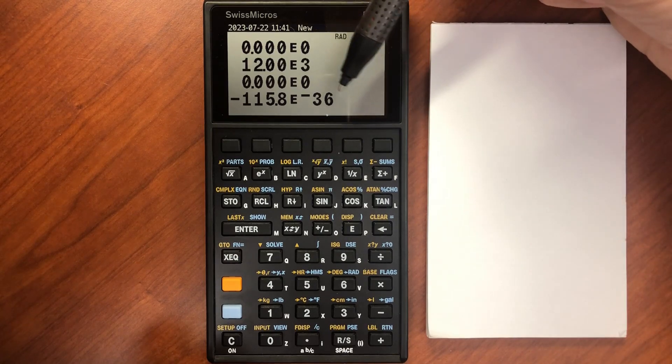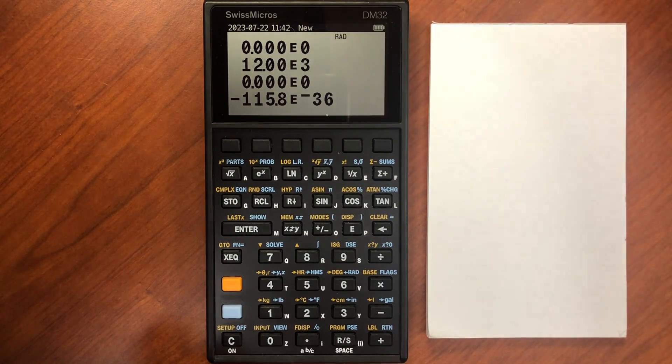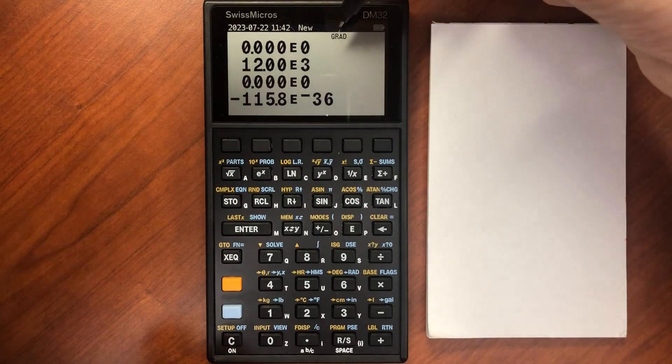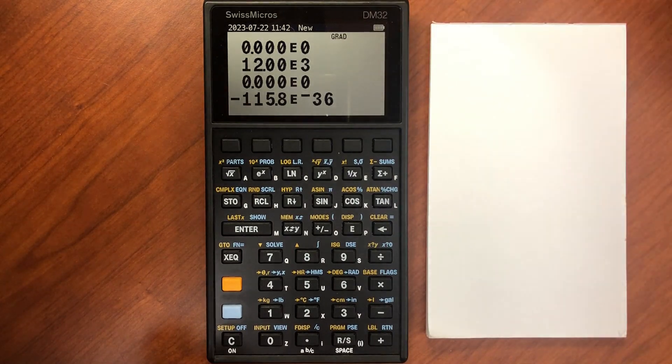That's just a rounding error in the calculator, but that is as close to zero as you can get. And then of course, if you are in gradient mode, you will have the grad indicator shown up there at the top.